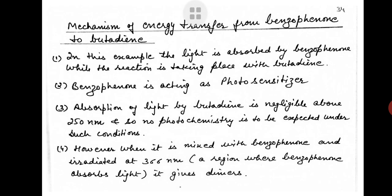Now let us see the mechanism of energy transfer from benzophenone to butadiene. In this example, light is absorbed by benzophenone while the reaction takes place with butadiene — benzophenone is acting as a photosensitizer. Absorption of light by butadiene is negligible above 250 nm, so no photochemistry is expected under such conditions. However, when it is mixed with benzophenone and irradiated at 366 nm — a region where benzophenone absorbs light — it gives dimers.